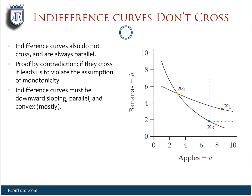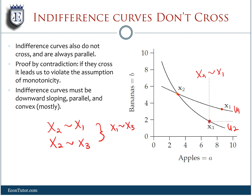Lastly, one key takeaway is that indifference curves cannot cross. The reason is it leads to a simple contradiction. If I have curve U1, you are indifferent between x2 and x1 because they're on the same indifference curve. You are also indifferent between x2 and x3 because they're on the same indifference curve. By transitivity, you should be indifferent between x1 and x3. But clearly x1 is preferred to x3 because it has more — that would violate the axiom of monotonicity, since x1 has more of everything compared to x3. This leads to a contradiction, so indifference curves can never cross and have to be parallel.